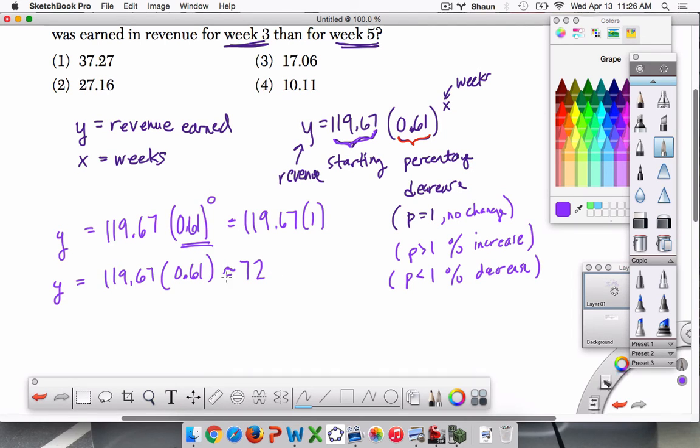So it's about 72 million now. Then the third week, we would just do 119.67 times 0.61 and then times 0.61 again. We're multiplying by 0.61 twice or it's 0.61 to the second power.